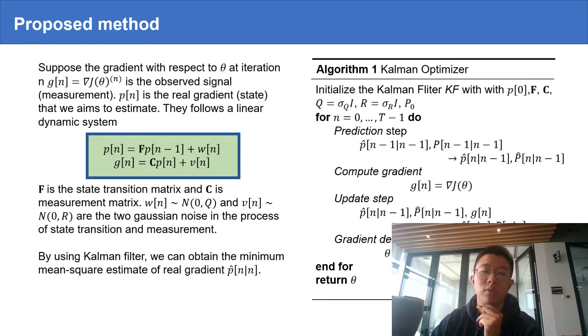Suppose the computed gradient G_n at iteration n is the observed signal. All we want to do is estimate the real state, the noiseless gradient P_n, from the noisy observations. Here, we assume that gradient descent follows a linear dynamic system with two Gaussian noises. Using the Kalman filter, we can estimate the minimum mean square estimate of P_n given G_n.